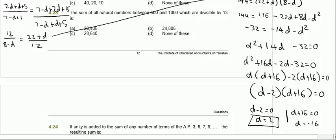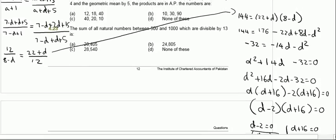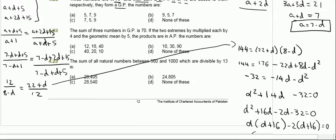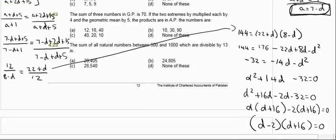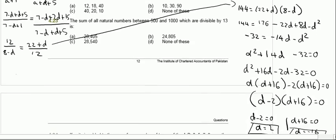We have two possible answers: d equals 2 and d equals minus 16. Since a equals 7 minus d, if d equals 2 then a equals 7 minus 2 which is 5.